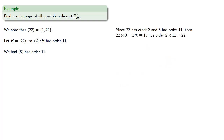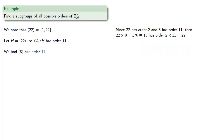And since 22 has order 2 and 8 has order 11, then 22 times 8 equals 176, which is congruent to 15 mod 23, and so 15 must have order 2 times 11, which is 22. That means that 15 is a generator of our group.